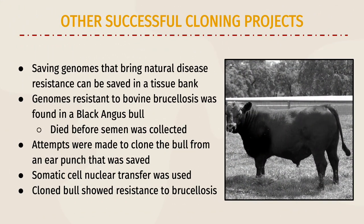Cloning and tissue banking are very powerful tools for preserving valuable genomes. This experiment revolved around a black Angus bull that was resistant to bovine brucellosis, approved by Texas A&M University's Institutional Animal Use and Care Committee. No semen was collected before the bull died, so it was believed that the disease-resistant genome was lost. An ear punch was collected from the bull in 1985 and frozen in liquid nitrogen for about 15 years. Researchers took cells from the ear skin and used somatic cell nuclear transfer to clone the disease-resistant bull. The cloned bull was also resistant to brucellosis, confirming that the nuclear transfer did not affect the disease-resistant genome and the cloning was successful.